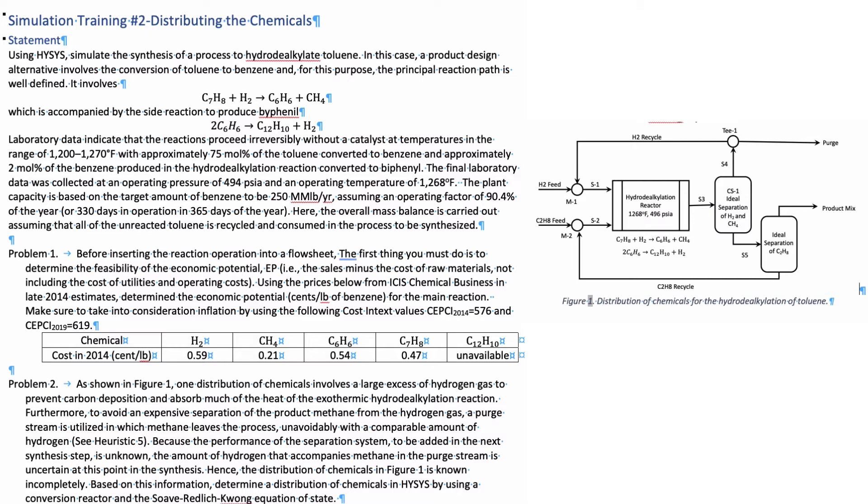Approximately 75% of mole of toluene is converted to benzene and approximately two moles of the benzene produced in the hydroalkylation reaction is converted to biphenyl.